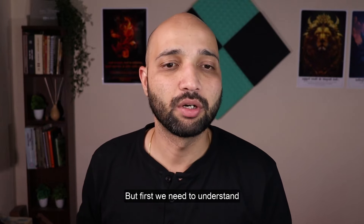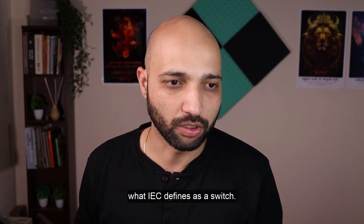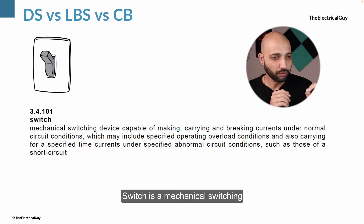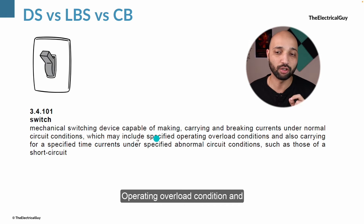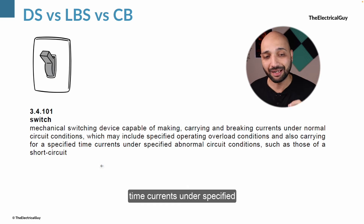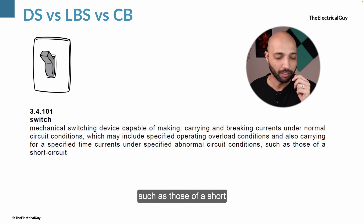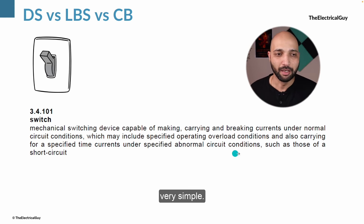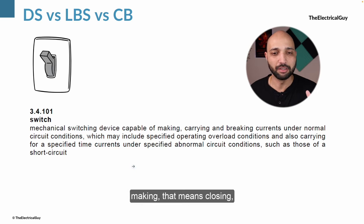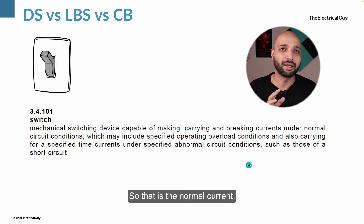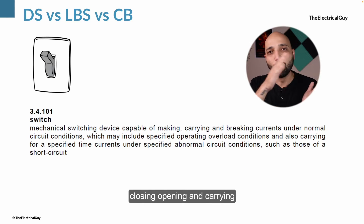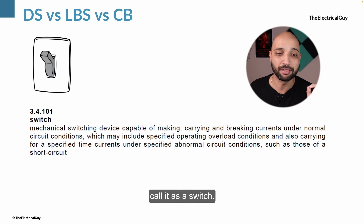First we need to understand what IEC defines as a switch. A switch is a mechanical switching device capable of making, carrying and breaking currents under normal circuit conditions, which may include specified operating overload conditions. So a device capable of closing, carrying and breaking normal currents — for example, if the rated current of your system is 200 ampere, that is the normal current — is what IEC calls a switch.